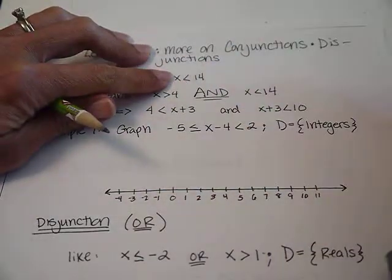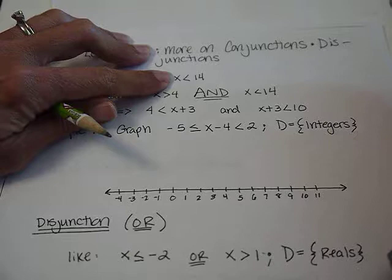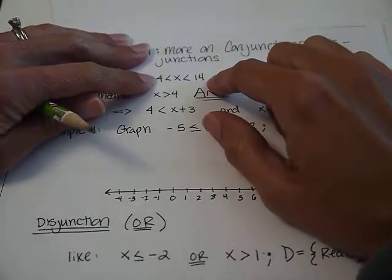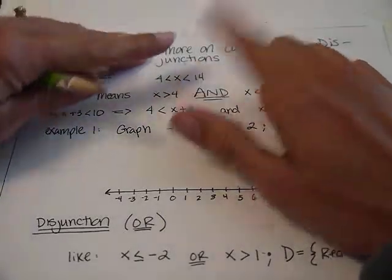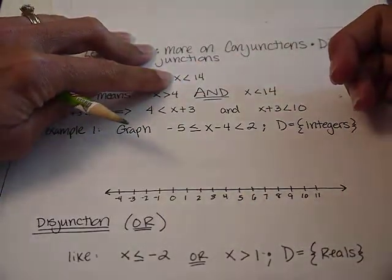and X is less than 14. Both conditions have to be satisfied. So it has to be greater than 4 and less than 14.